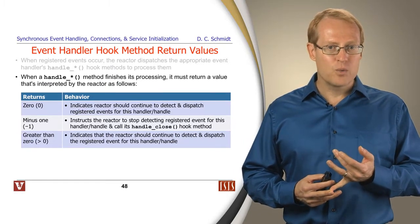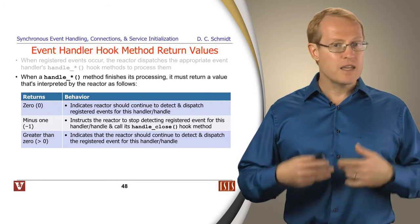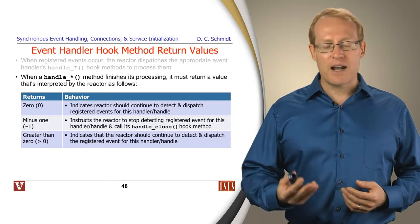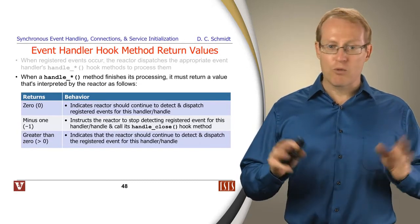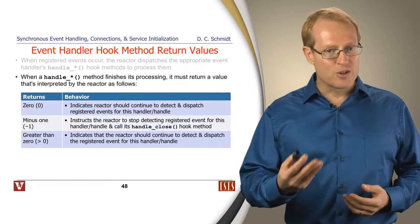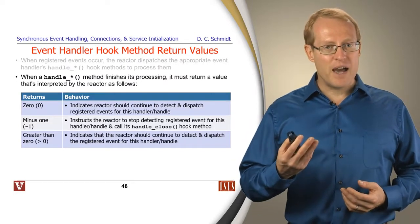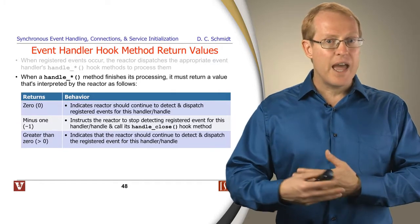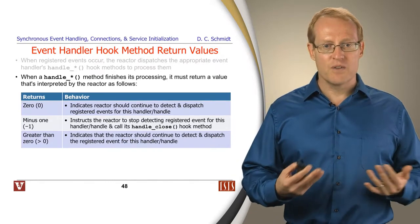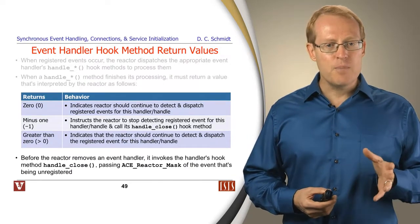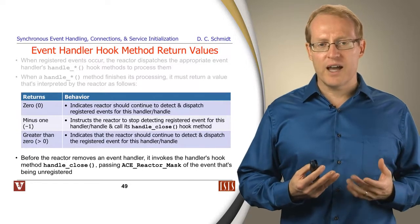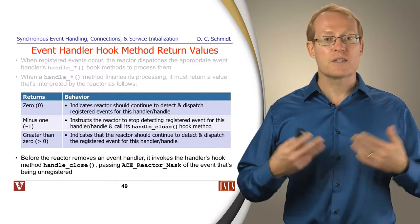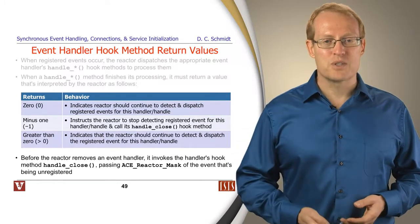Here are the different values that get passed back. So we have the zero value, which means everything worked fine. Keep me registered. I'd like some more callbacks in the future when my handles become ready again, please. If you give back a minus one, it says something went wrong or I'm done. Please call my handle close hook method and shut me down. And if you give back a greater than one, that indicates that please redispatch me again after you've handled all the other various sources of input in this particular pass. The key point here is that when things get shut down, the reactor knows how to call the handle close hook method on an event handler, and that can be used to clean itself up, often by deleting this, as we'll see later on.